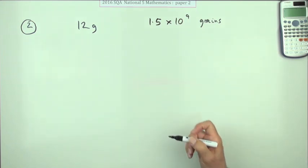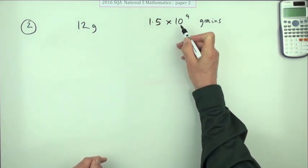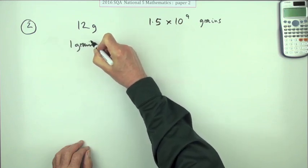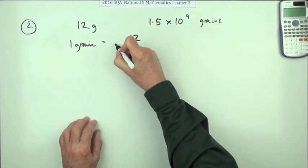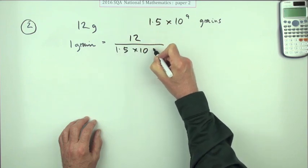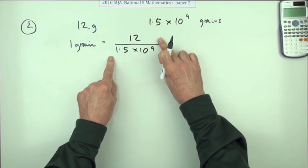If it had been in Paper 1, then you would have had to figure out, well, put this down first of all. One grain would be, if the whole lot is 12, then each grain is going to be divided by this number. Now if that had been in Paper 1, then you'd have had to demonstrate your knowledge of these powers.